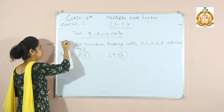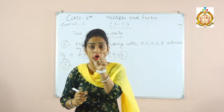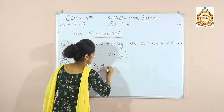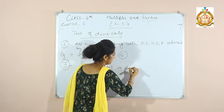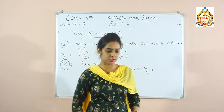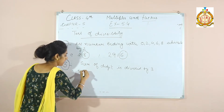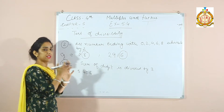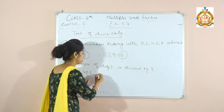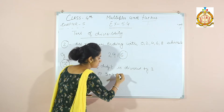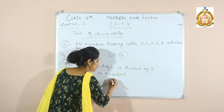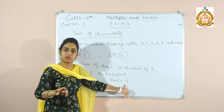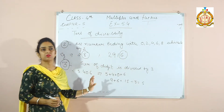Now, divisibility by 3. The sum of all digits must be divisible by 3. For example, the number 5406: add 5 plus 4 plus 0 plus 6, which equals 15. Since 15 is divisible by 3, the number is divisible by 3.